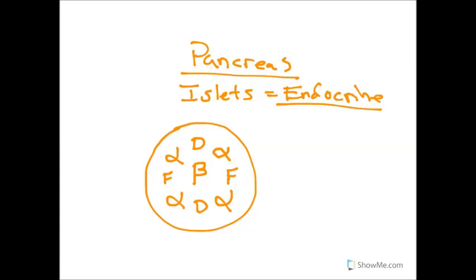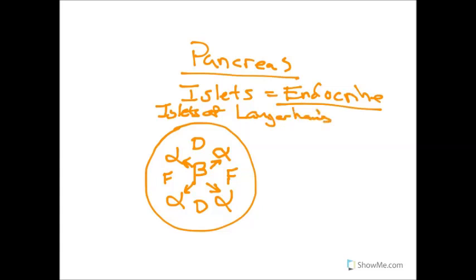When beta cells produce insulin, insulin will go out to your alpha cells and suppress their production of glucagon — this is a paracrine communication. These islets are sometimes called islets of Langerhans after Dr. Langerhans, who discovered and described them.